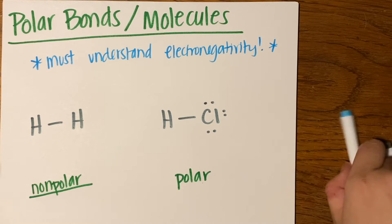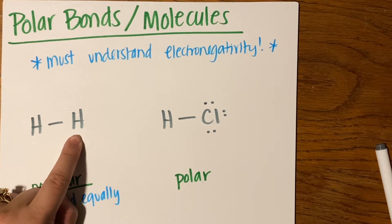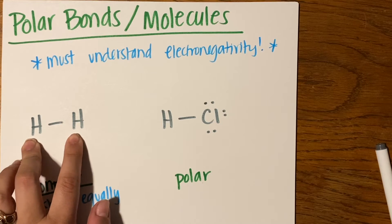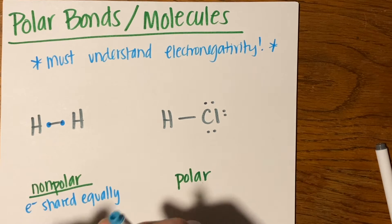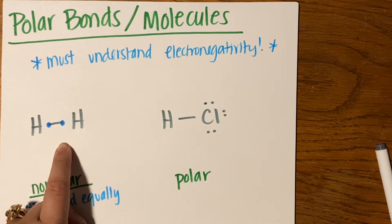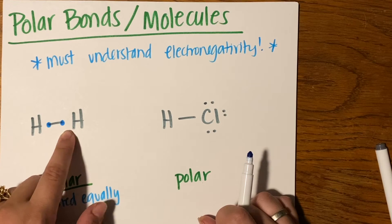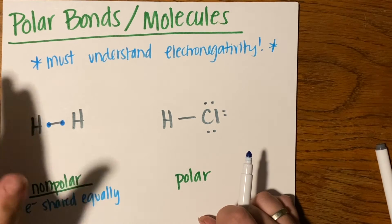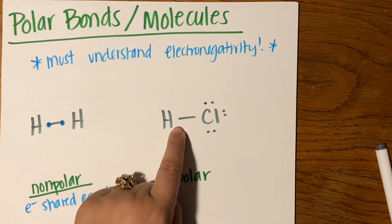Non-polar means your electrons are shared equally. In the example of hydrogen bonding to another hydrogen, both hydrogens are going to pull on those shared electrons the exact same amount. Imagine a game of tug-of-war where both hydrogens have the exact same strength - the same electronegativity. They are both attracting those electrons by the exact same amount, so the electrons are shared completely evenly and equally between the two hydrogens.